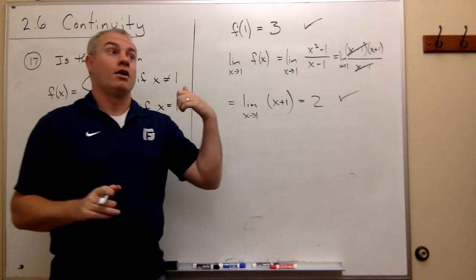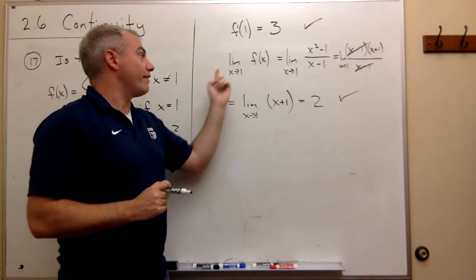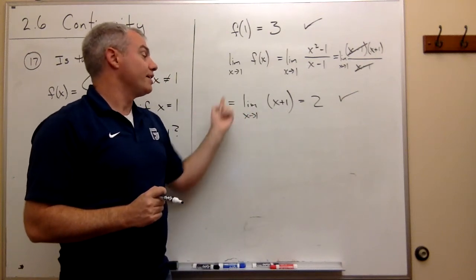We're through step 2. Step 1, do I have a functional value? Yes, I do. It's 3. Step 2, do I have a limit value at 1? Yes, I do. It's 2.